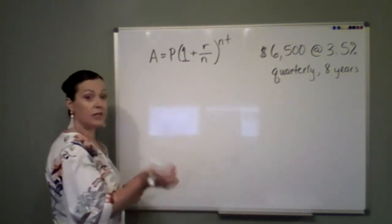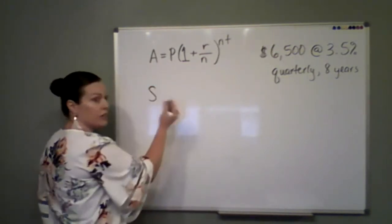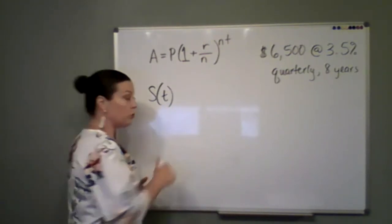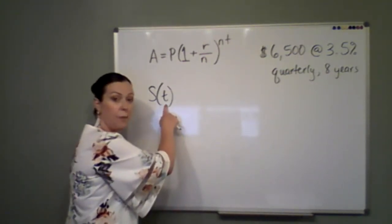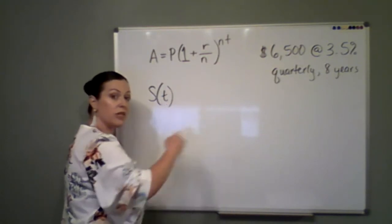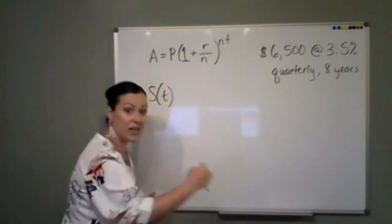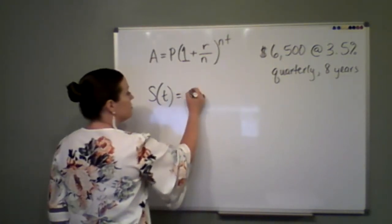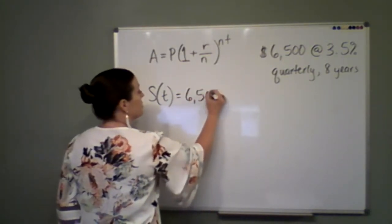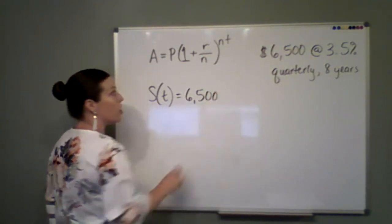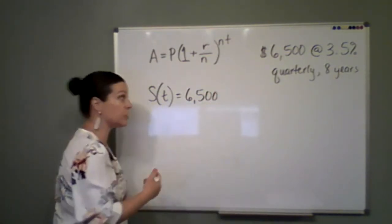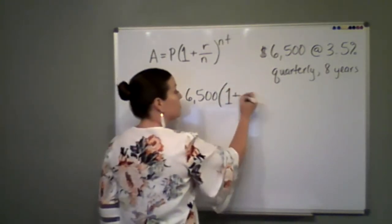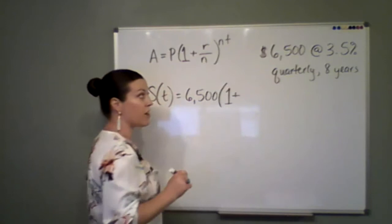So you might see something like your savings after the amount of time. The X is generally used in terms of T because the X the input is based off of time and how much time has passed. So the savings we have with time is we start off with $6,500 as our principal investment. Then we took the 100% of that plus my rate. Well, my rate is three and a half percent.